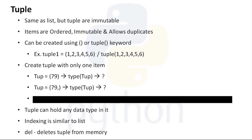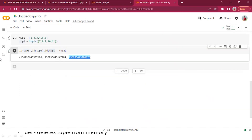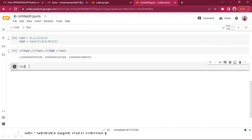Creating a tuple with only one item: if I do tuple = (79) and try to find the type of that, what will the type be? Let me create tuple three with only one element which is 79 and print it.